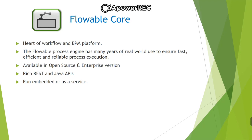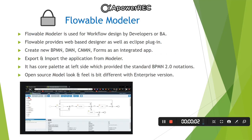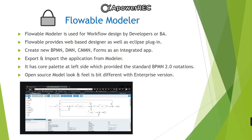The second component is Flowable modeler. It is an app that allows users with modeler privileges to model processes, forms, decision tables and application definitions. It is used for workflow design by developers or business analysts. Flowable modeler provides a web-based designer as well as an Eclipse plugin. We can create new BPMN, DMN and CMMN forms as an integrated application, and also export and import applications. It has a core palette on the left side providing standard BPMN 2.0 notations. The open source modeler look and feel is slightly different compared to the enterprise version, known as Flowable Design.